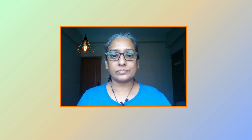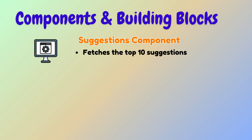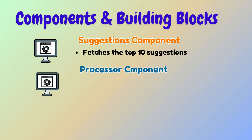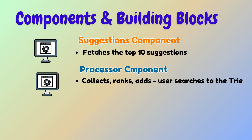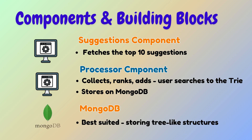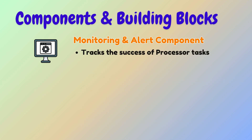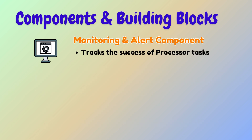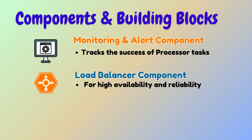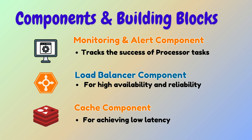Now let's identify the high level components of the type-ahead system. The suggestion component provides the top 10 suggestions for a prefix. The processor component collects, ranks, and adds user searches to the trie, storing them in a NoSQL database like MongoDB, which is best suited for storing tree-like structures. The monitoring and alerting component tracks the success of tasks handled by the processor. For high availability and low latency, we use load balancers and cache.